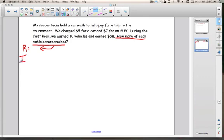Now I'm going to do the I step. What information was given to us in this problem? The first sentence about the soccer team held a car wash for a trip to a tournament doesn't tell us anything we need to know. The next sentence says we charged $5 for a car. The price of $5 for a car seems important, so I'm going to write that down. $5 equals car.